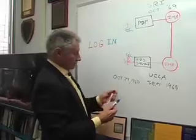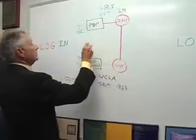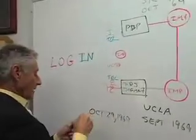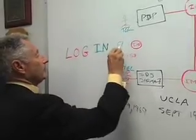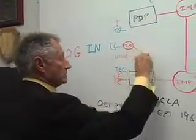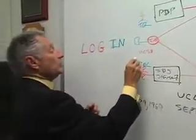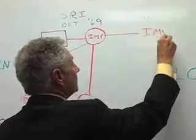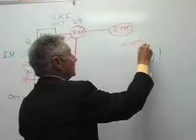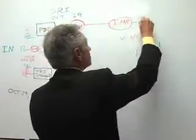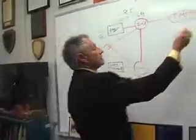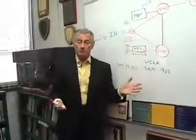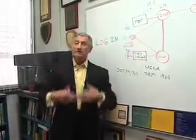A month later, another IMP was delivered to the University of California, Santa Barbara, and they connected their host — and we had a couple more lines connecting these IMPs together. This was in November of 1969. A month after that, a fourth IMP was deployed at the University of Utah, and they connected their host computer in — this was December 1969. So we had a four-node network running. We began to test it, find faults, and had BBN fix them.